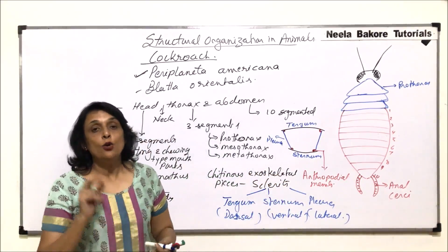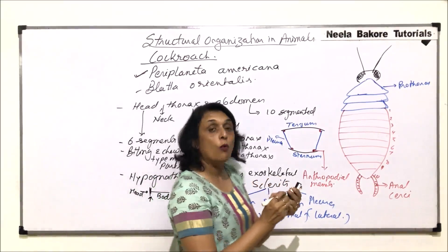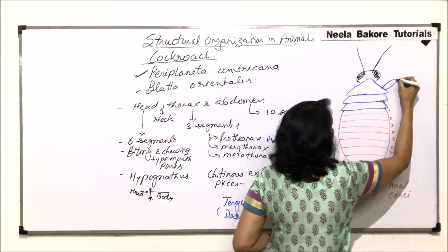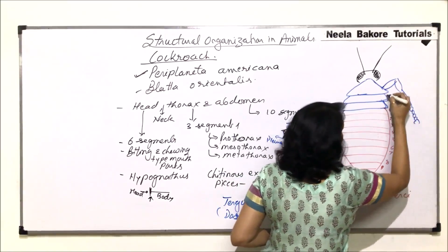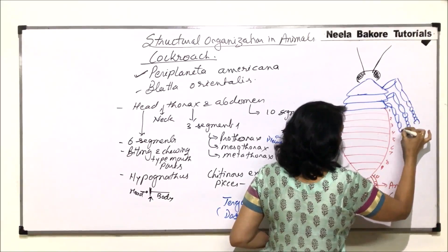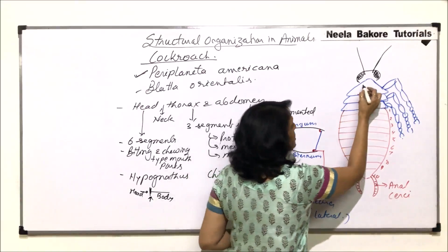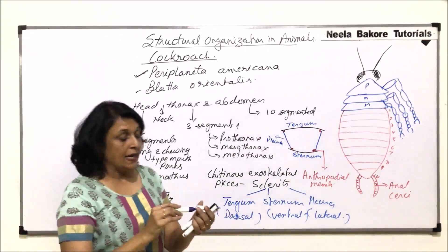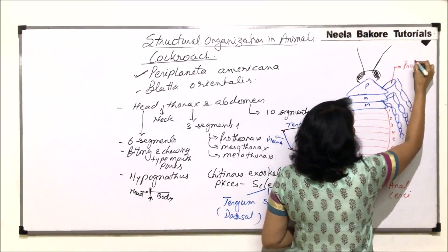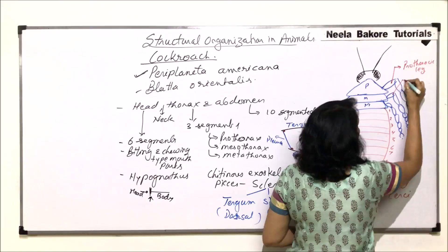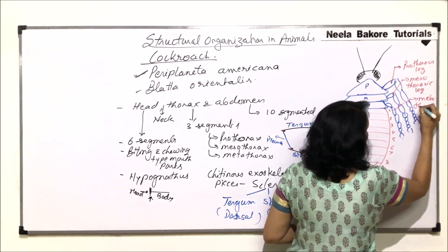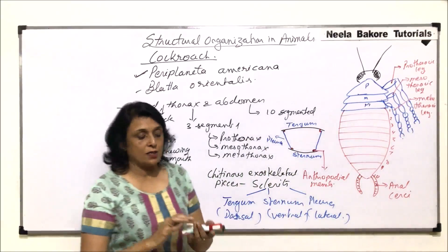Thorax has two main structures: walking legs and wings. Walking legs are present in each thoracic segment, giving three pairs of legs. Depending upon the segment, they are called prothoracic leg, mesothoracic leg, and metathoracic leg. We will study the detailed structure of the leg also.